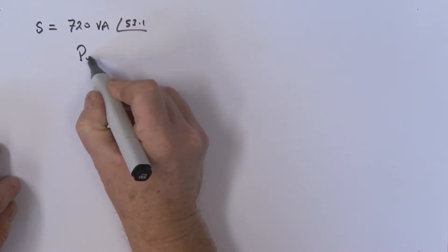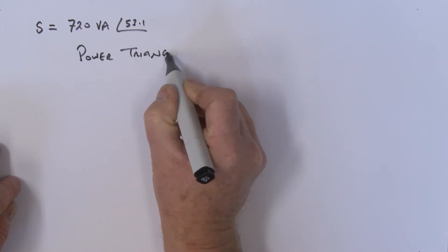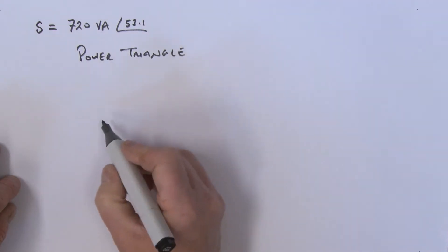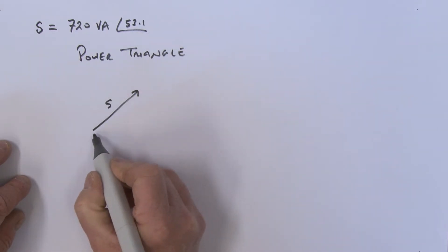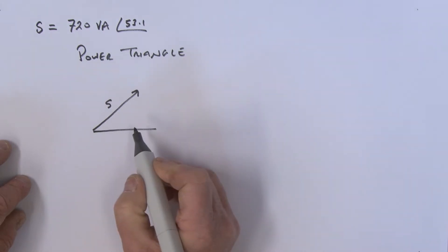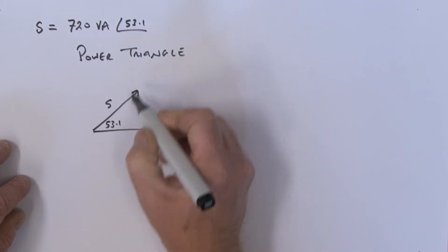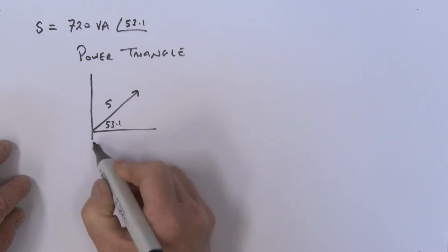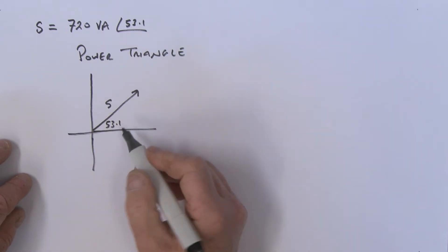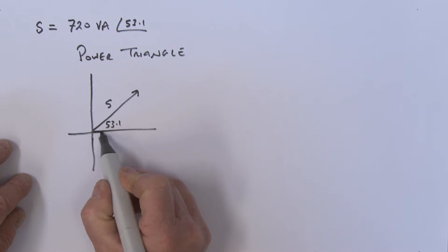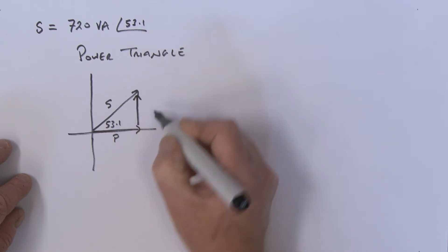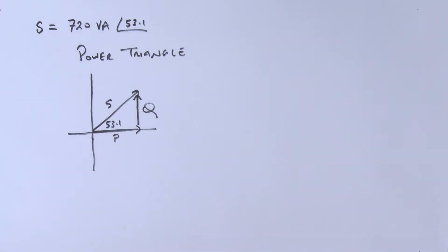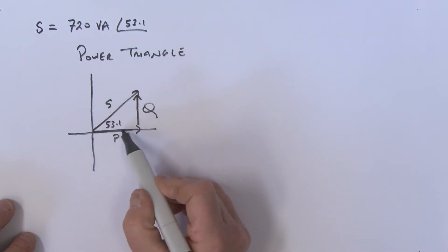Let's go ahead and construct the power triangle. We have S at an angle of 53.1°. The real power P is along the horizontal, and the reactive power Q is the vertical component.